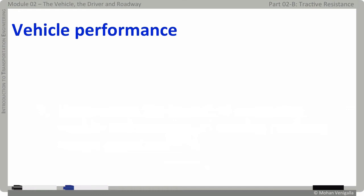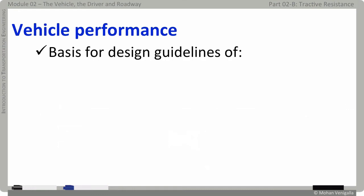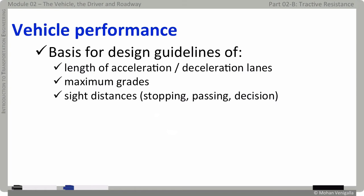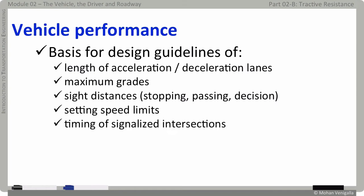Performance of road vehicles forms the basis for roadway design guidelines such as length of acceleration and deceleration lanes, maximum grades, stopping sight distances, passing sight distances, setting speed limits, and timing of signalized intersections. All these things are dependent on vehicle performance.